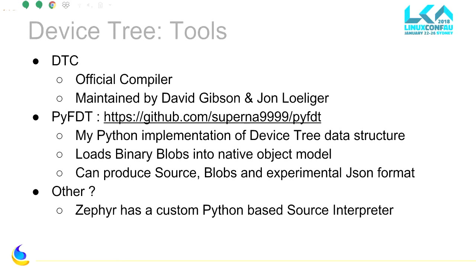The DTC official compiler is maintained by David Gibson and Jon Loeliger. Jon Loeliger made the Python device tree interpreter — pyFDT — whose primary goal was to load binary blobs and provide a native object model in Python to add properties and merge multiple blobs into one. Interpreting source is more complex because you need a frontend, which is not the goal of the Python library. Zephyr, a new RTOS backed by the Linux Foundation, has a custom Python-based source tree parser.